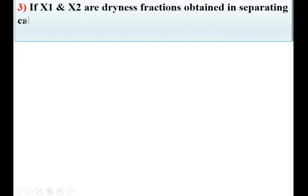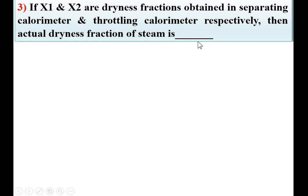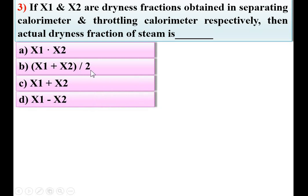Next: if X1 and X2 are dryness fractions obtained in separating calorimeter and throttling calorimeter respectively, then the actual dryness fraction of steam is option X1 × X2, (X1 + X2)/2, X1 + X2, or X1 − X2. You need to remember that for a combined separating and throttling calorimeter, the actual dryness fraction is the product of X1 and X2. So A is the right answer.